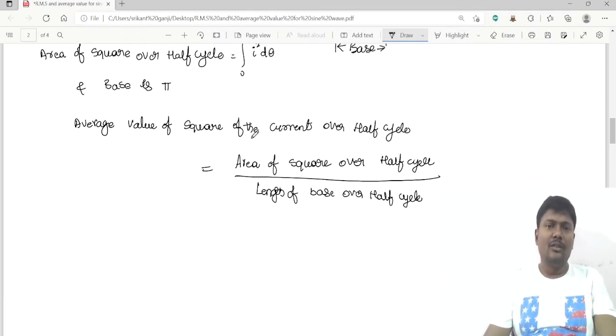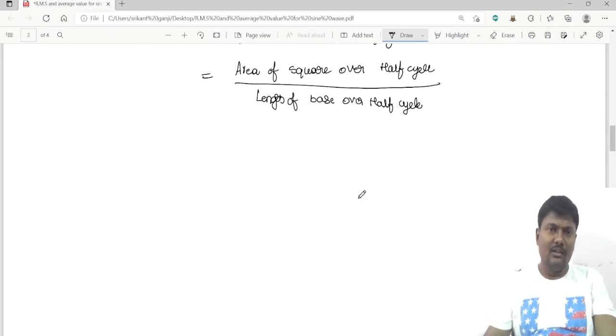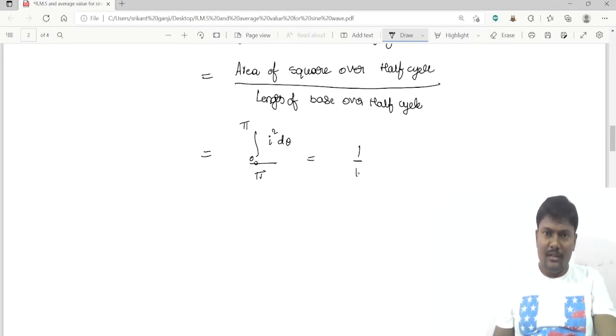The length of the base is π. If you want to calculate the average value of square of the current over half cycle, it is equal to area of square over half cycle divided by length of the base. So 1 by π integration of 0 to π, I_m square sine square theta into d theta.